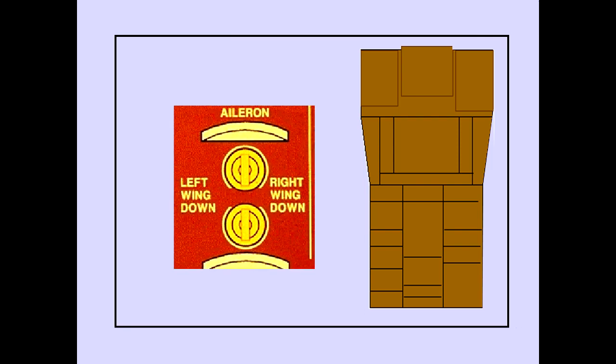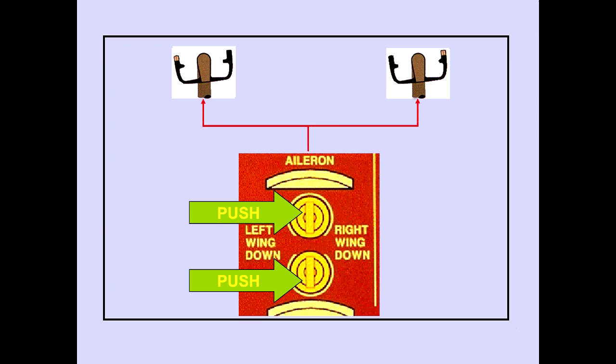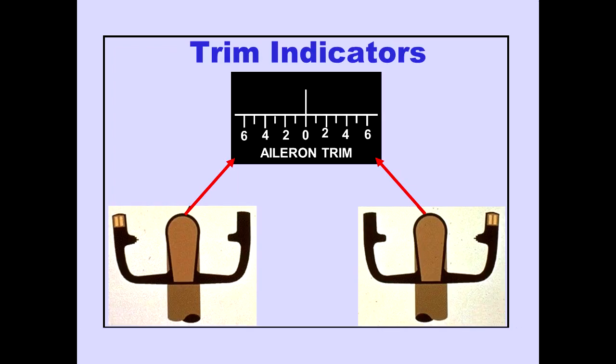Aileron trim switches are located on the aisle stand. The switches are spring-loaded toggle switches with three positions: left wing down, right wing down, and neutral. When both aileron trim switches are pushed in the same direction, trim signals are sent to move the ailerons and reposition the control wheels. Aileron trim indicators are located on each control column and display units of aileron trim.